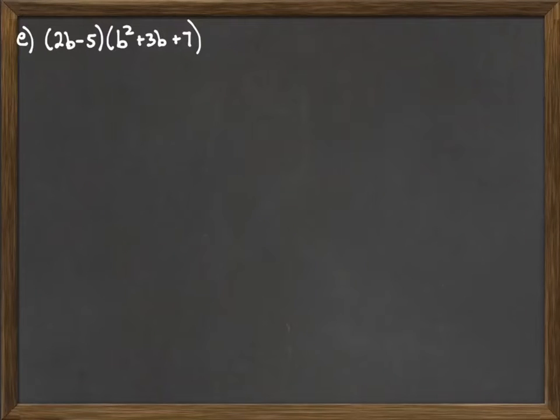So the last batch of videos we talked about multiplying a binomial times a binomial. What we're going to look at now is what happens here when we have more than two terms in one of our polynomials. It turns out nothing changes.